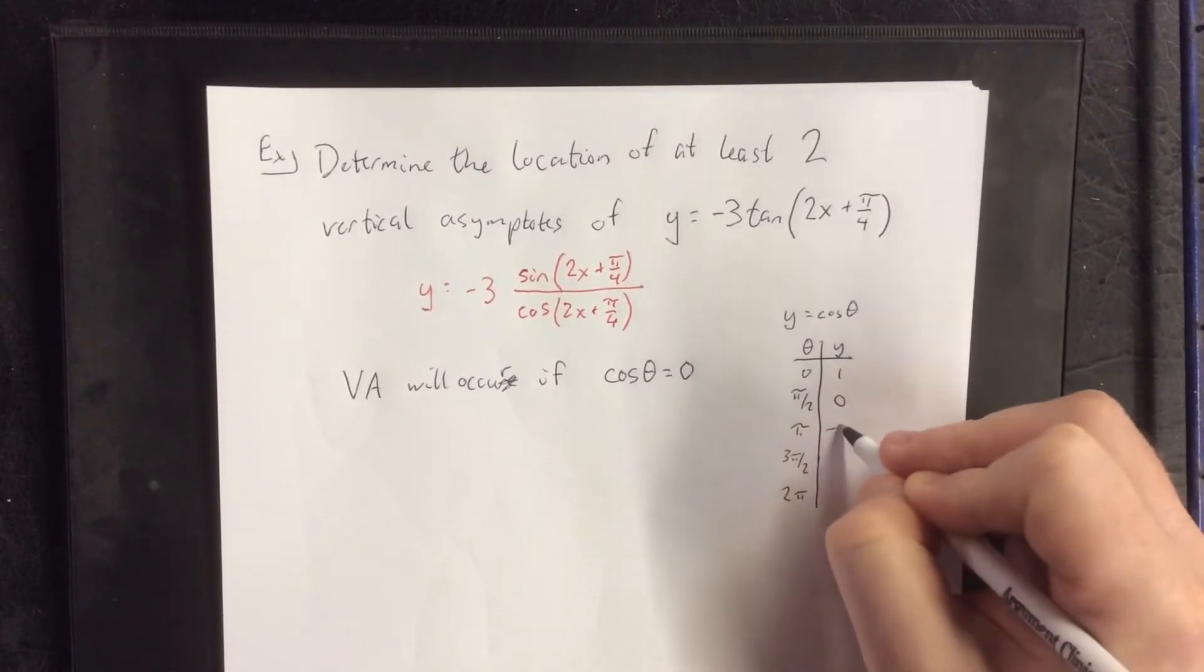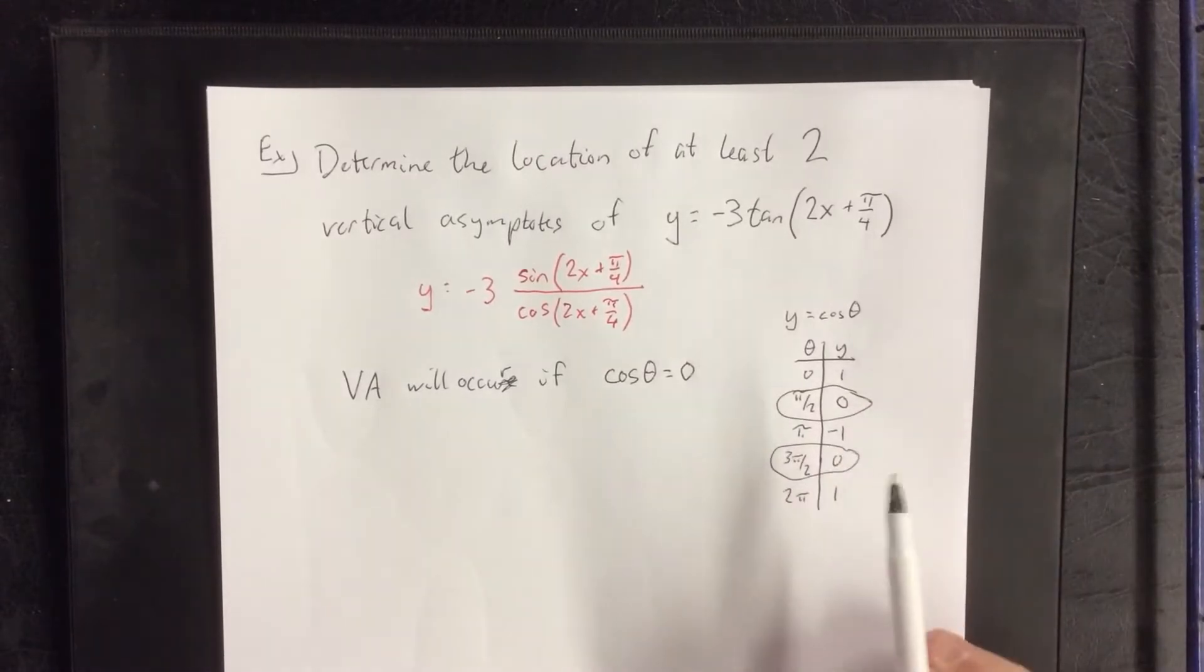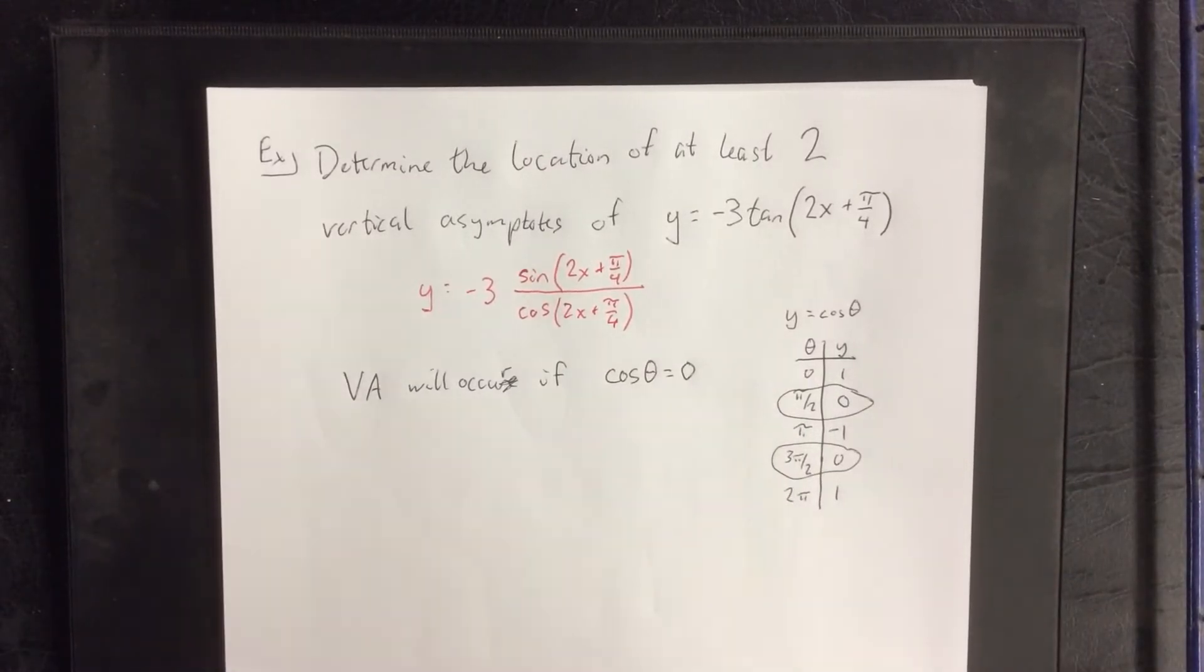There's 1, 0, negative 1, 0, and 1. These points here and here would create a vertical asymptote.